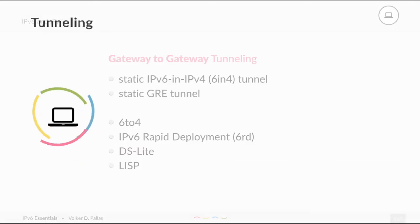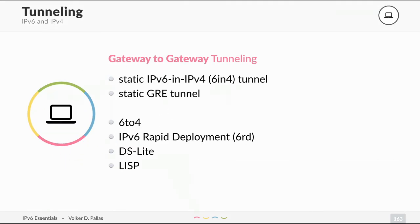Tunneling. Let's start with gateway-to-gateway tunneling. We have a static IPv6 and IPv4 tunnel, also called 6in4, and we have a static GRE tunnel. Then we have a 6to4 tunnel, which is automatic. We have an IPv6 Rapid Deployment 6RD tunnel. We have DS Lite and we have LISP. This is all gateway-to-gateway tunneling.